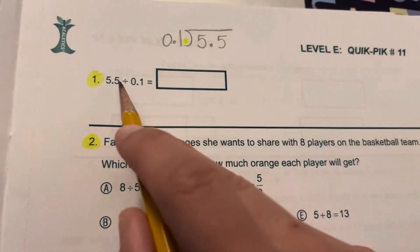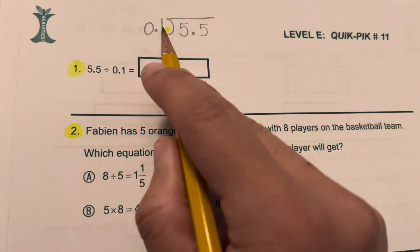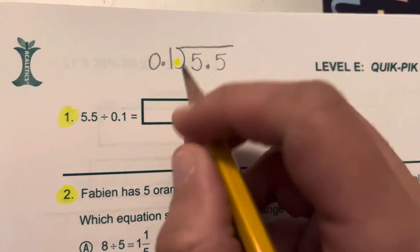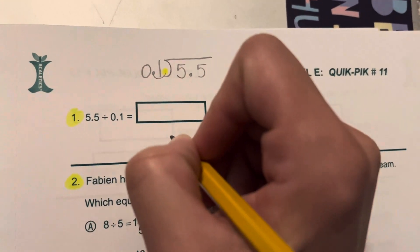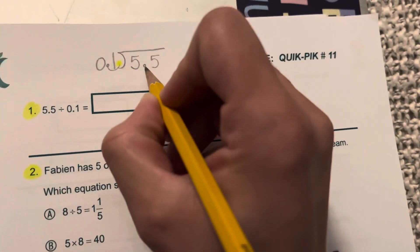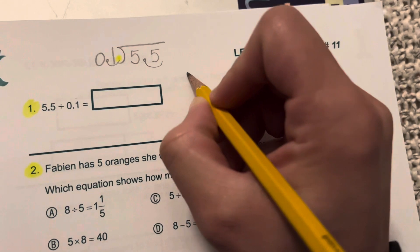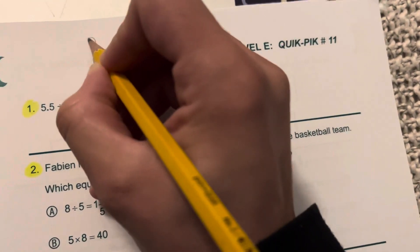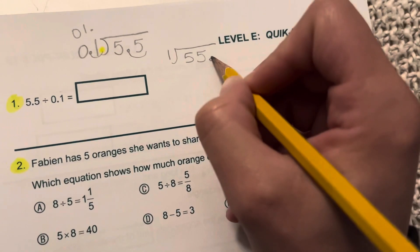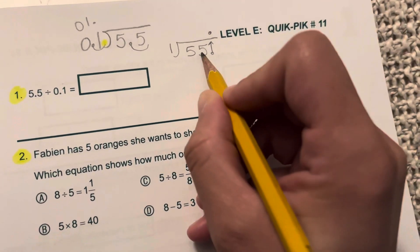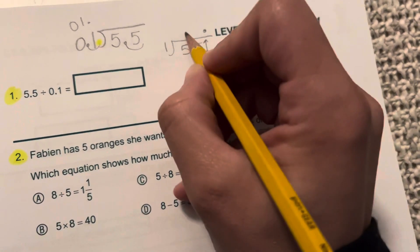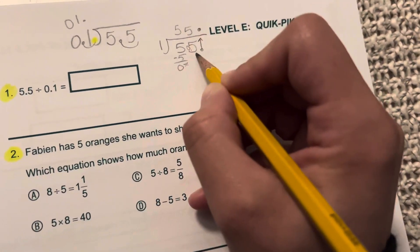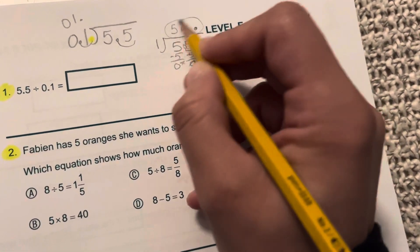We did number one, where we said the first number is your inside number and the second number is your outside number. We even said that you were going to put a little yellow decimal point at the end. Because anytime we have decimal division, I need you to move that decimal to the back. So if you make one loop outside, then I need to make one loop inside. This now would turn into 55 because the decimal is at the back. And 0.1 is just 1. Then your decimal comes straight up and we have 55 divided by 1. 1 can go into 55, 55 times.